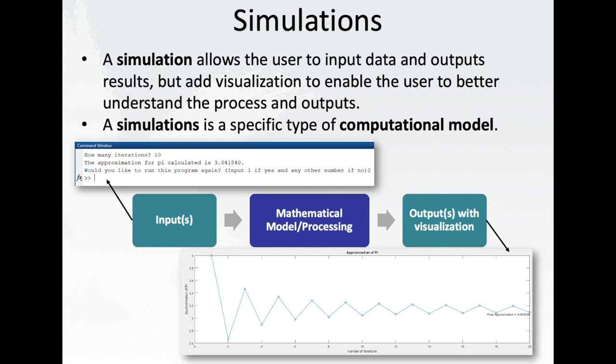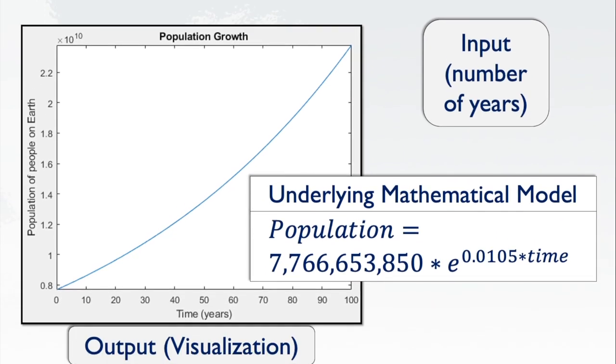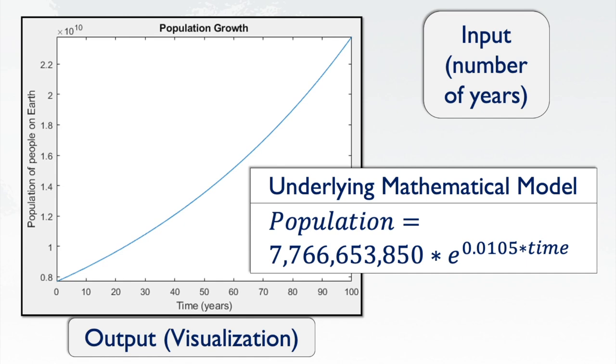One type of computational model is a simulation. A simulation has input and output with an underlying mathematical model to enable that transformation. But it also has another important component: visualization. That's what makes this a simulation.